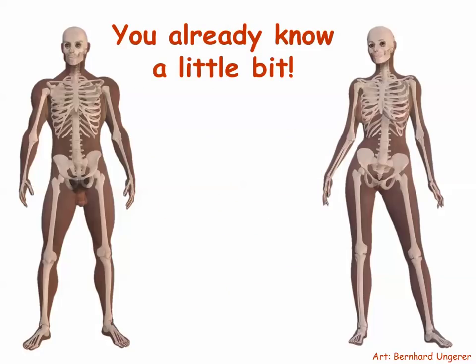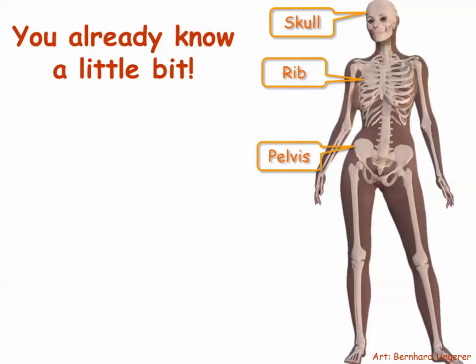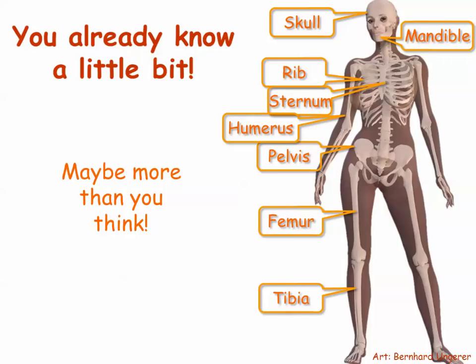You may not realize it, but you probably already know at least a few of the names on that big long list of skeletal features. For example, you probably already know what is meant by a skull bone. You know what a rib is, and you know what the pelvis is. Maybe you even know a few more than that. You may have heard the lower jaw bone called the mandible, or have heard or even used terms like sternum, humerus, femur, and tibia. Now that long list of foreign terms has become just a bit shorter, at least in regard to new learning.